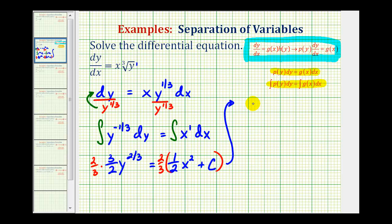So here we'll have y to the two-thirds. And here we'll distribute, two-thirds times one-half is going to be one-third, so we'll have one-third x squared. And then we'll have two-thirds times c, which is just another constant, so we'll write plus c sub one, where c sub one would be equal to two-thirds times c.